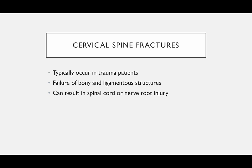Cervical spine fractures typically occur in trauma patients because of failure of bony and ligamentous structures. The cervical spine is a very mobile portion of the spine. The thoracic spine is to some degree protected by the rib cage, and the junction between the rigid thoracic spine and the mobile lumbar spine is also an area where you can get injuries — at the thoracolumbar junction.